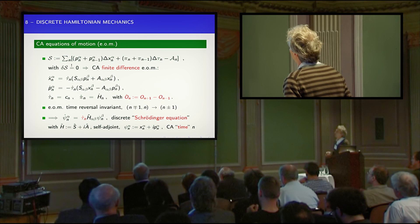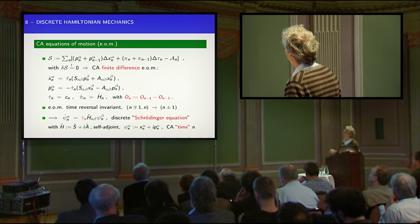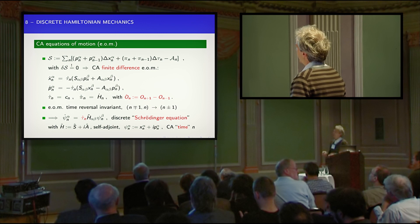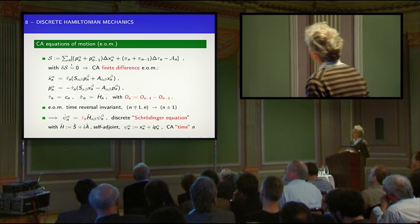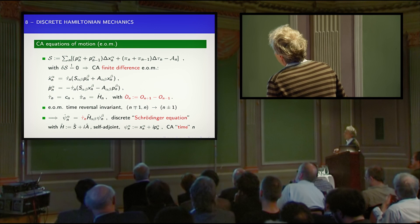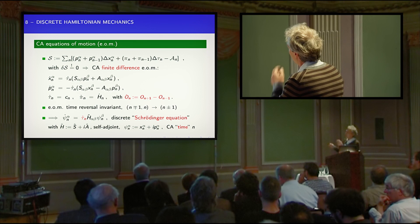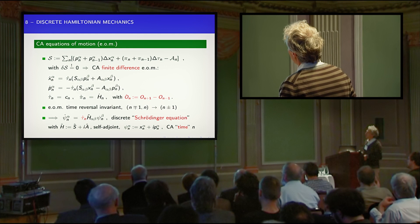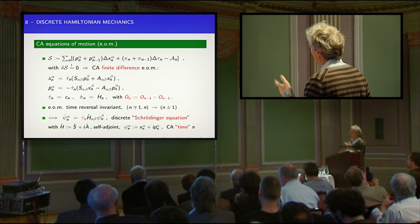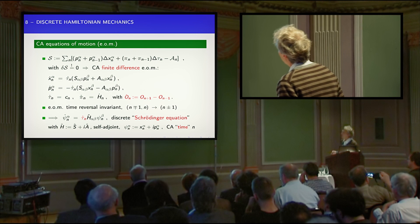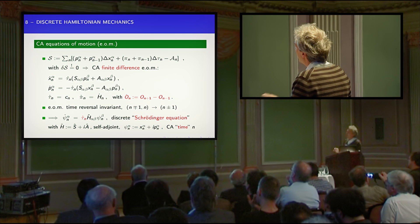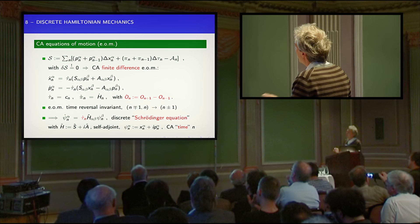First observation is that these equations are time reversal invariant. If you know state n minus 1 and state n, you can calculate from this equation state n plus 1 — but you can as well read these equations backwards. Now comes a little surprise: let's introduce a self-adjoint matrix, which is just this combination of the symmetric matrix and the anti-symmetric matrix from our action. Let's combine these coordinates and momenta in this very obvious way — the language I will use is the language of quantum mechanics, but this is not quantum mechanics of course.